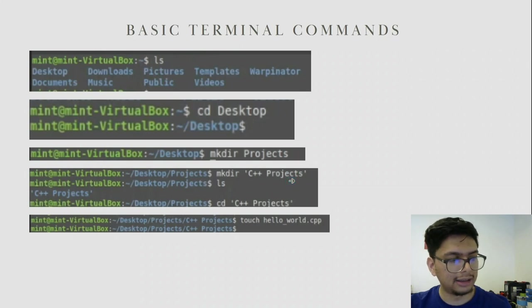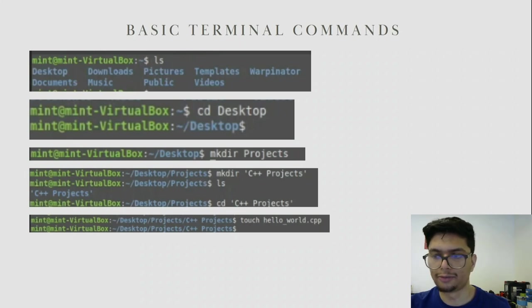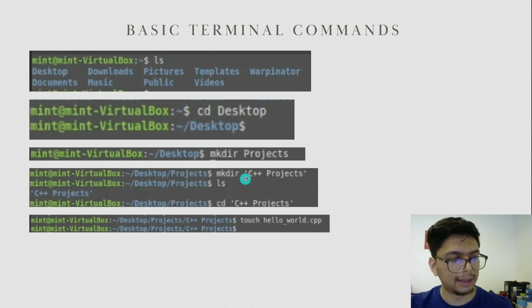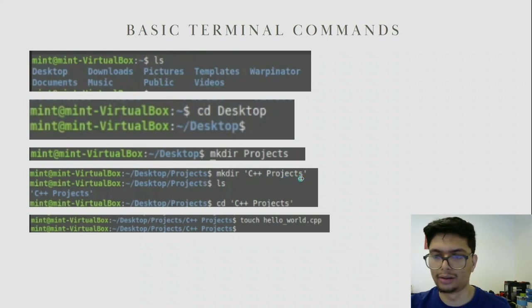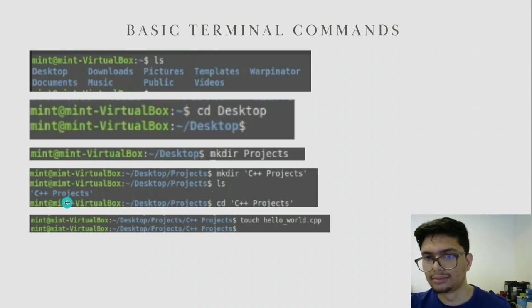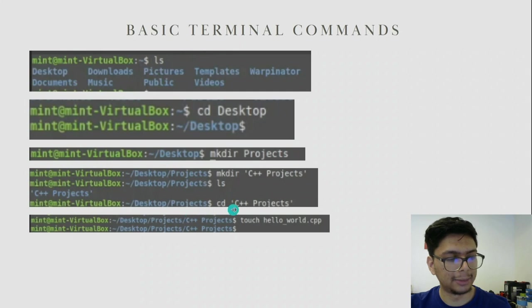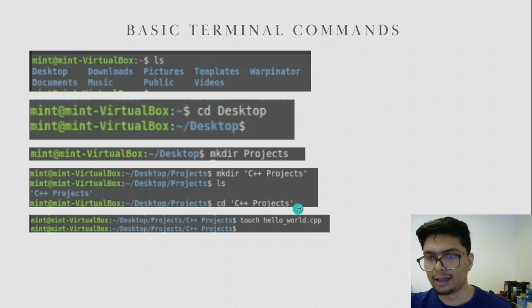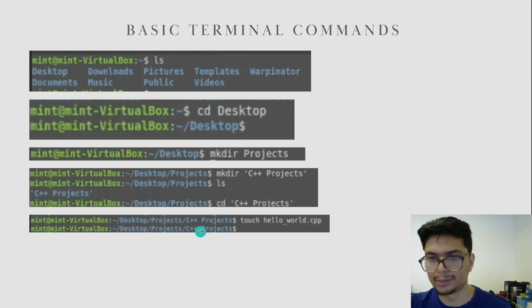To create a subfolder called 'C++ Projects', we use mkdir again. If you want to add a space in the name of your directory, you need to add single quotes around it — so you type mkdir 'C++ Projects'. That allows you to add a space between the words. If you type ls, you can see the directory was created. To cd into this directory, you also need single quotes.